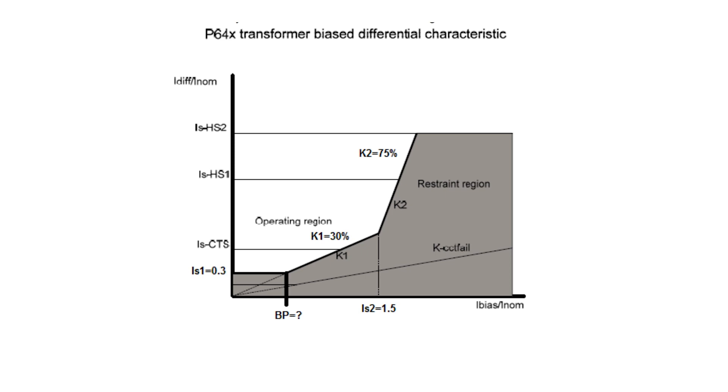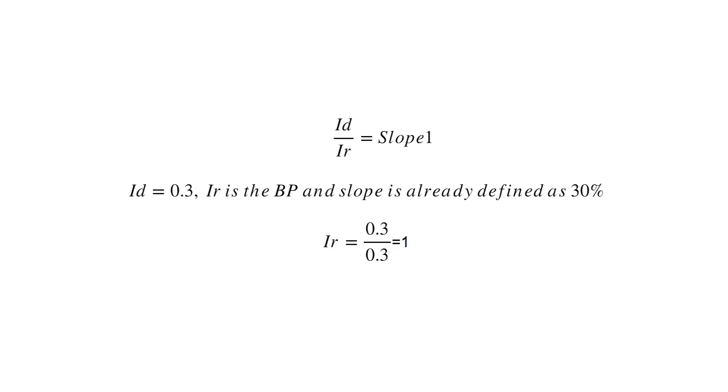To identify BP, let us use the formula ID by IR equals slope 1. IG equals 0.3. IR is the BP and slope is already defined as 30%. IR equals 0.3 divided by 0.3 equals 1.